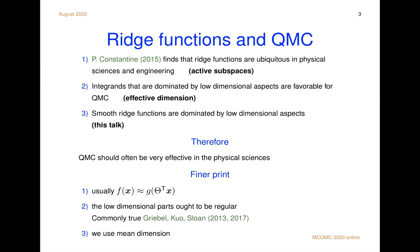With a little bit of finer print, f of x is usually only approximately the ridge function. So it could be this function plus some small error. But when you take an average of a small error, it's still going to be small. The low dimensional parts, they need to be regular enough to benefit from quasi Monte Carlo. And there's work by Griebel, Kuo and Sloan showing that if you have a discontinuous function in high dimensions, it may effectively be close to a smooth one. All of the ANOVA components might be smooth, except for the very highest one. And we're going to use mean dimension instead of effective dimension. It's easier to get a theoretical and a computational handle on mean dimension.